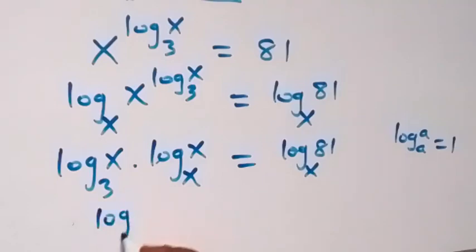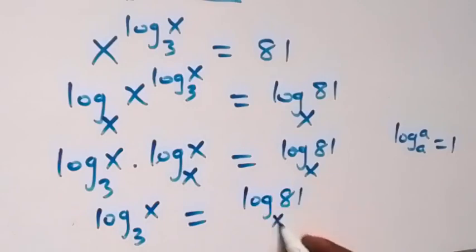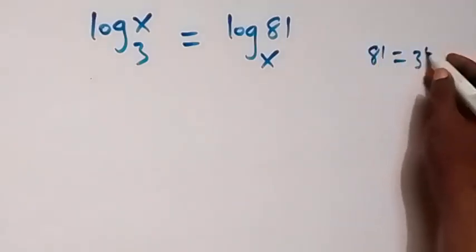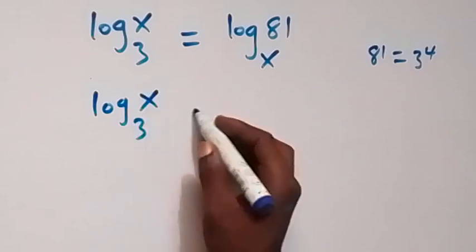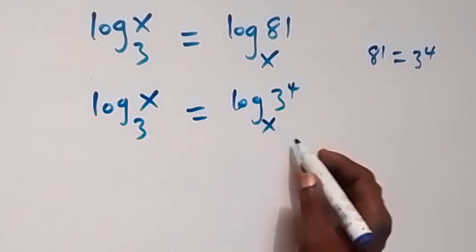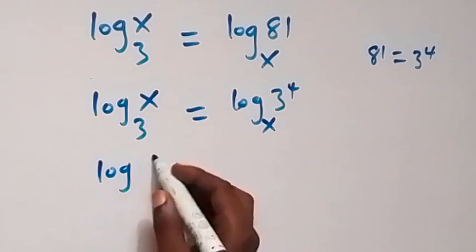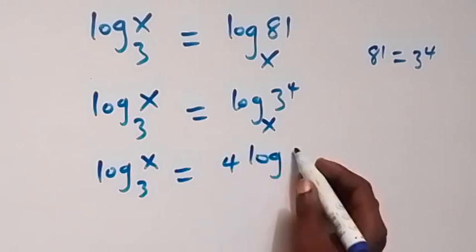We are now left with log x base 3 equals log 81 base x. In the next step, we write 81 as 3 raised to the power 4, so we have log x base 3 equals log 3^4 base x. Applying the power rule, the 4 comes to the front, giving log x base 3 equals 4 log 3 base x.